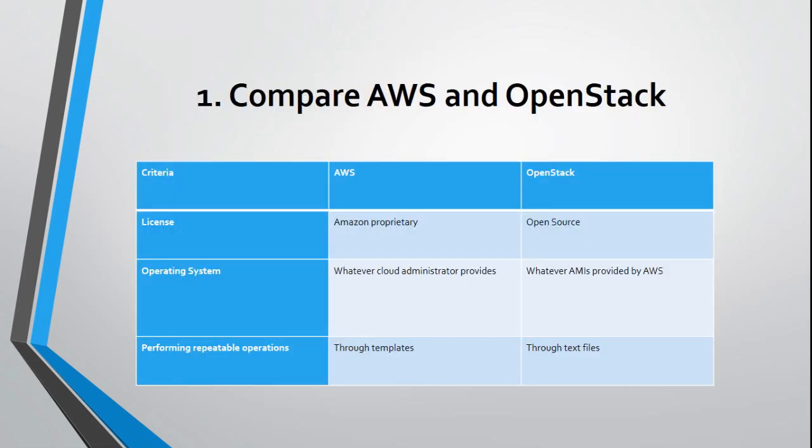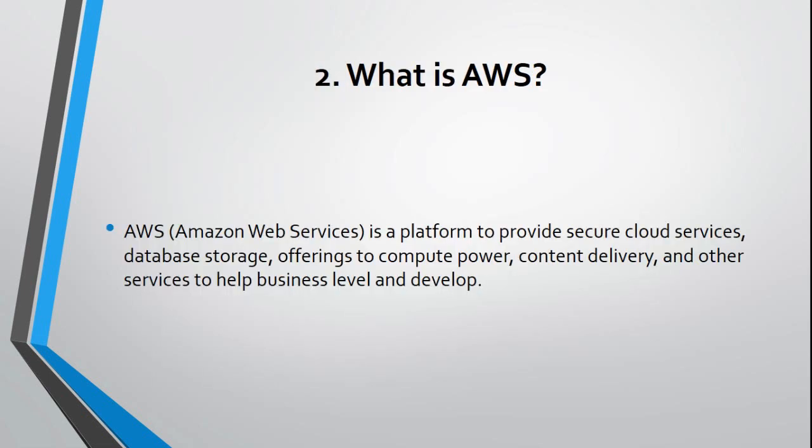Question 1: Compare AWS and OpenStack. Question 2: What is AWS? AWS, Amazon Web Services, is a platform to provide secure cloud services, database storage, offerings to compute power, content delivery, and other services to help businesses level and develop.